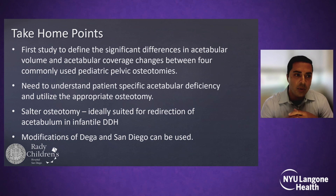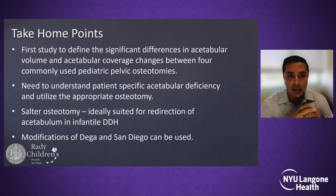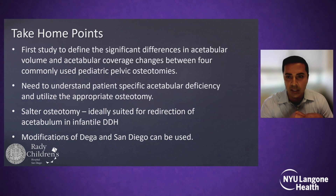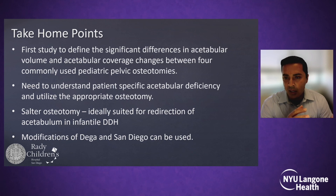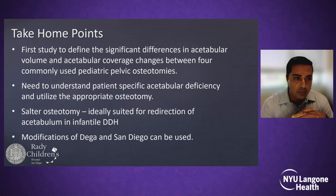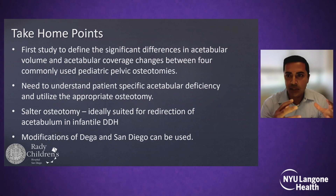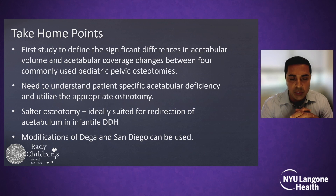Some take-home points: this was the first study to define significant differences in acetabular volume and coverage changes between the four commonly used pediatric pelvic osteotomies. It's important to understand patient-specific acetabular deficiency and utilize the appropriate osteotomy for that patient. In our hands, the Salter osteotomy is ideally suited for redirection of an infantile acetabulum that tends to be smaller in volume. Modifications of the Dega and the San Diego can be used to provide more anterior or posterior coverage depending on what's needed.